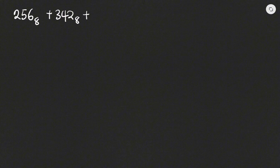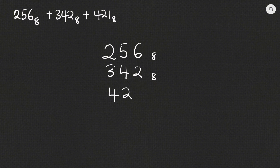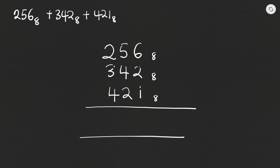Let's proceed to see another example. In this example we have to find the sum of 256 base eight, 342 base eight, and 421 base eight. So I have 256 in base eight, 342 in base eight, and 421 in base eight.